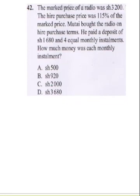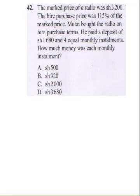The marked price of a radio was 3,200 shillings. The hire purchase price was 115 percent of the marked price. He bought the radio on hire purchase terms, paying a deposit of 1,680 shillings and four equal monthly installments. How much was each monthly installment?